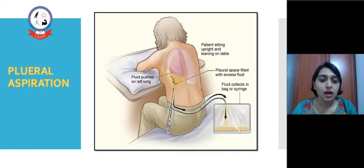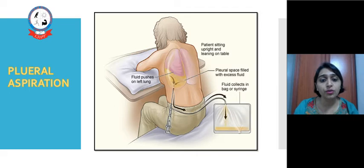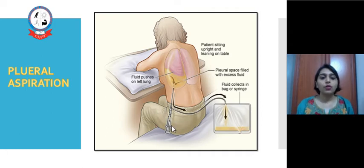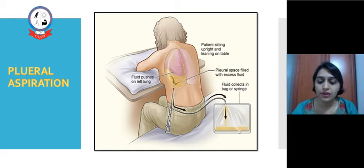Here we can see how pleural aspiration is performed. The patient should sit in a forward-lean position so that gravity directs all fluid downward. Aspiration is taken between the 5th or 6th intercostal space. The amount of fluid aspirated should be noted, collected in a bag, and can also be sent for laboratory investigation.